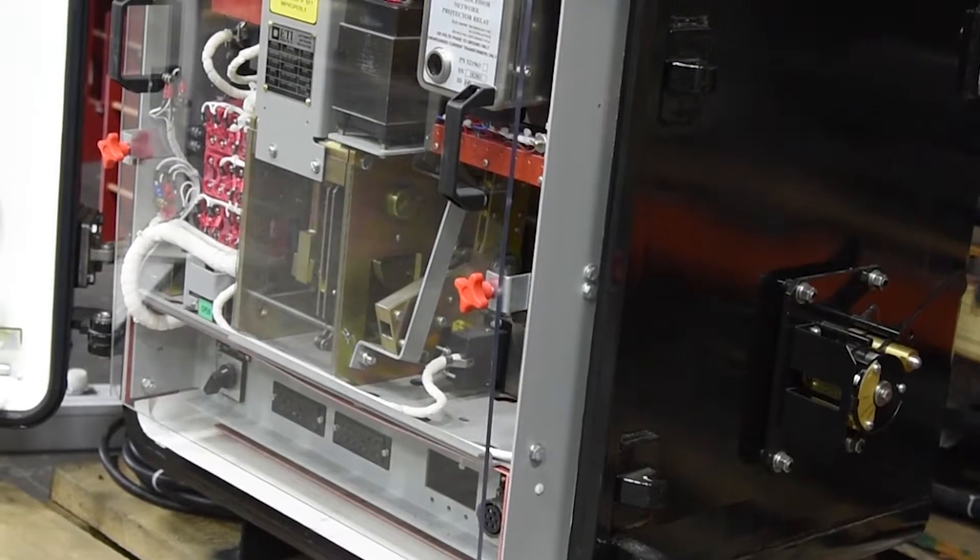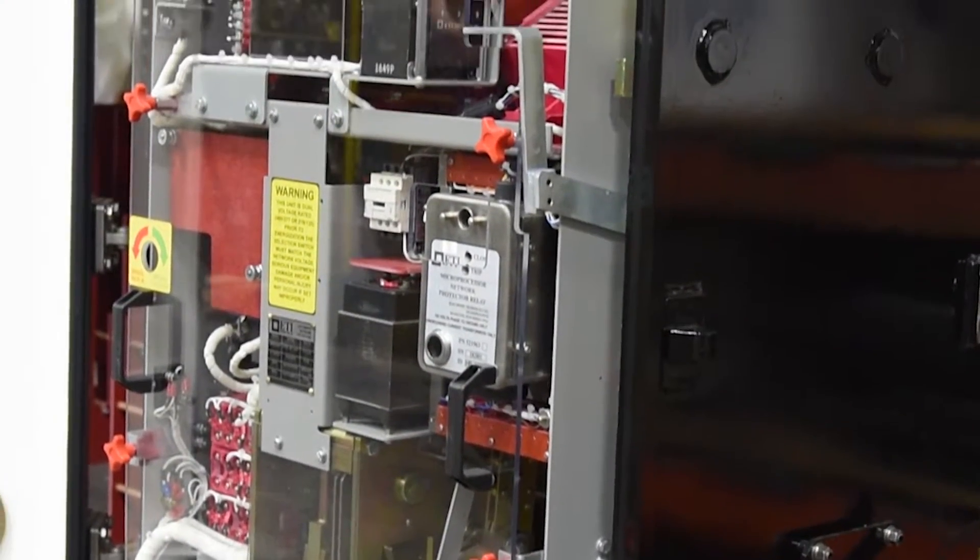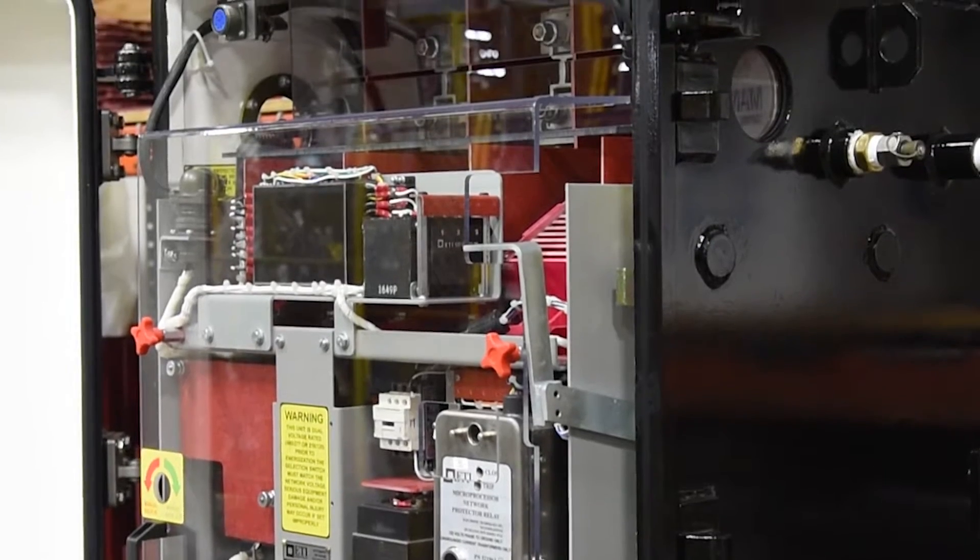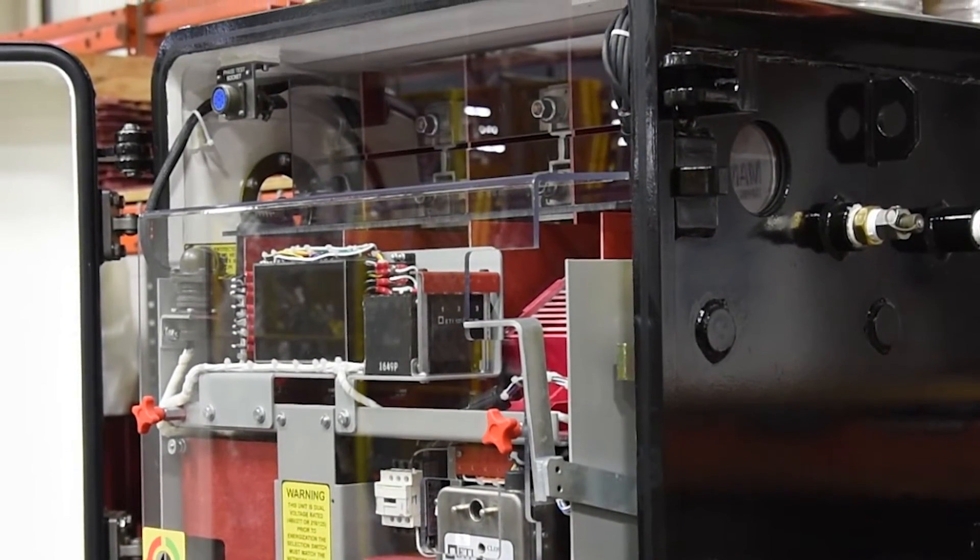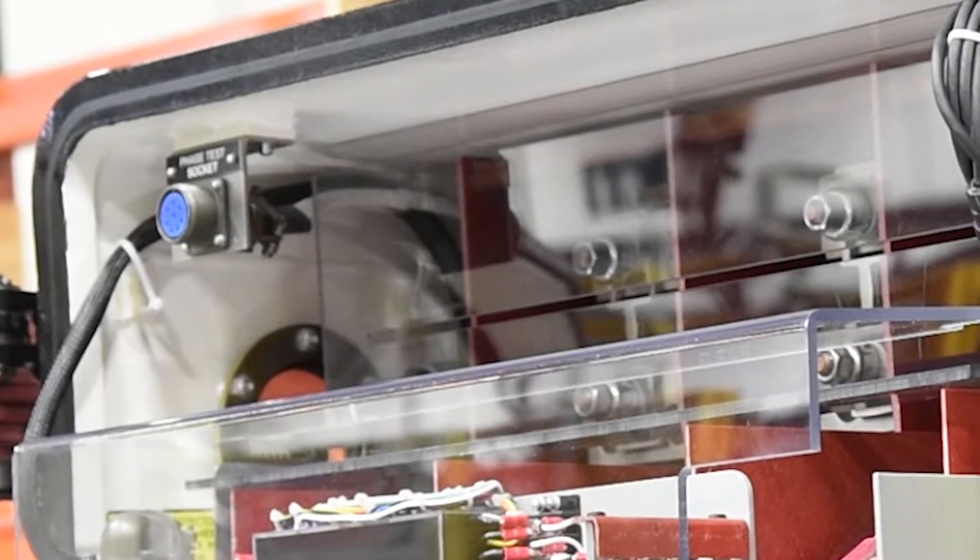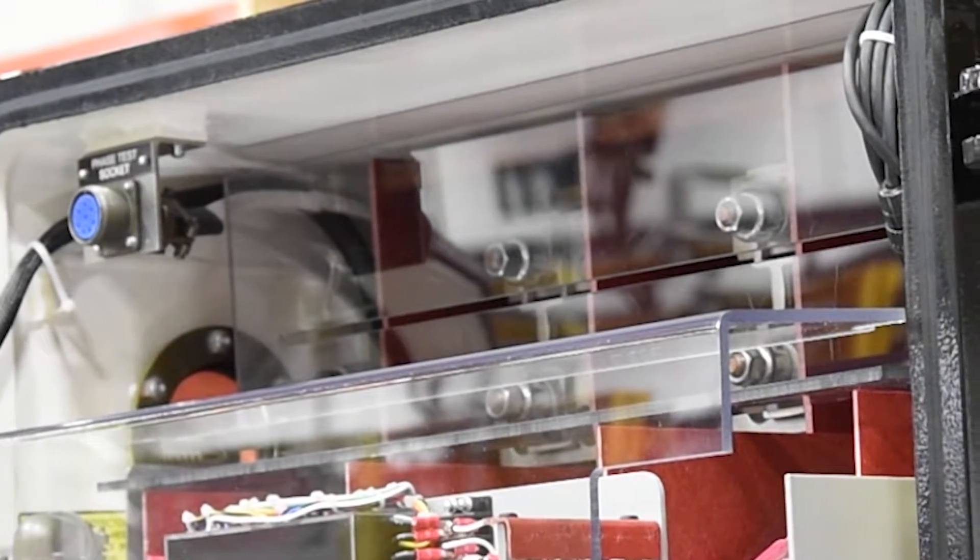The 416NP features a set of quarter inch thick high temperature polycarbonate Lexan covers over the front face of the mechanism and fuse locations. These Lexan covers restrict access to all energized components.